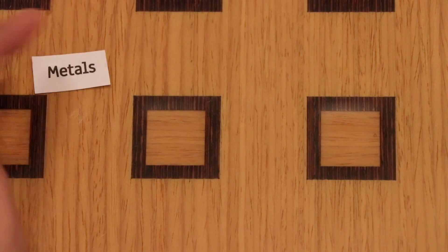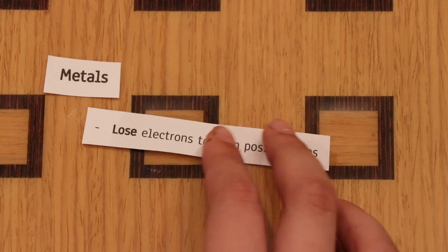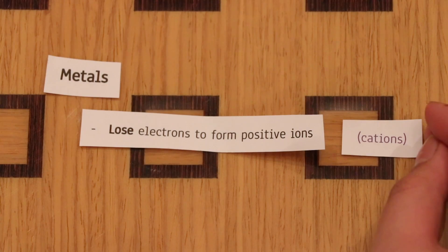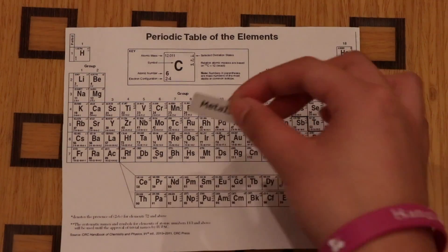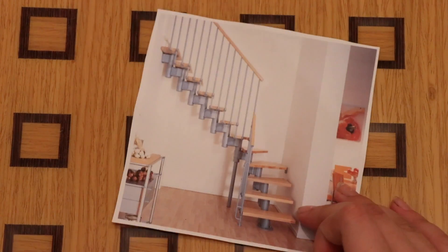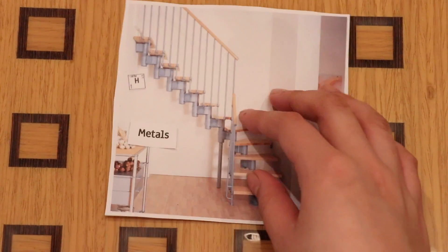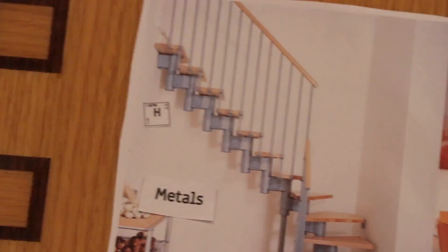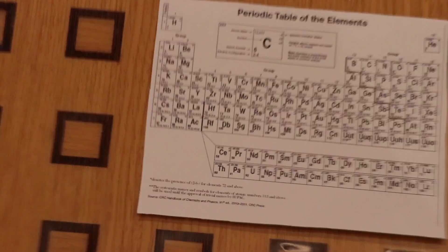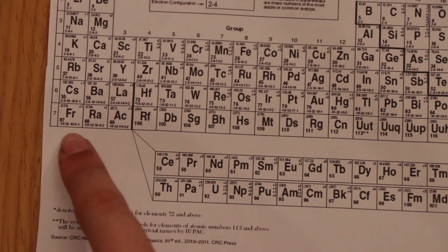Let's start with metals. Metals lose electrons to form positive ions, also known as cations. Most elements on the periodic table are metals — in fact, two-thirds of the chart are metals. They are found to the left of the staircase, except for hydrogen, which is a non-metal despite being on the left. The most active metal is in the lower left: Fr, francium.